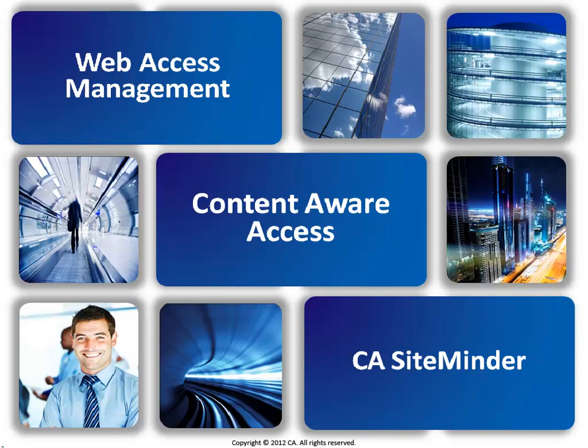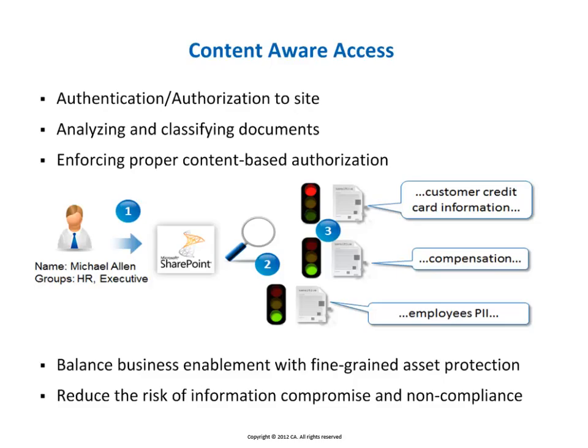CA SiteMinder can use information classification in its policy enforcement decisions, thereby providing ForwardInk with increased granularity in how it defines its access and usage policies. This enables CA SiteMinder to make access decisions based not only on whether the user is authenticated and authorized for access, but also on the sensitivity of the resource, as determined by the content classification engine.